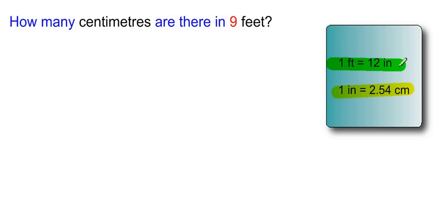Therefore, I can take my 9 feet and convert that into inches. So if I have 9 feet and I want to convert that into inches, I simply need to multiply by 12 inches per foot, putting the units that I want on top and the units that I no longer want on the bottom.